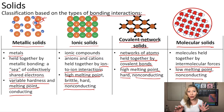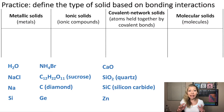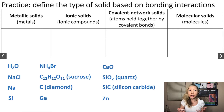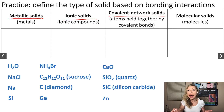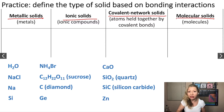Now let's do a practice problem. Let's try to figure out the type of these solids based on the bonding interactions. We will be differentiating between metallic solids which are made out of metals, ionic solids which are made out of ions, covalent network solids which are made out of atoms held together by covalent bonds, and molecular solids made out of molecules held together by intermolecular forces.